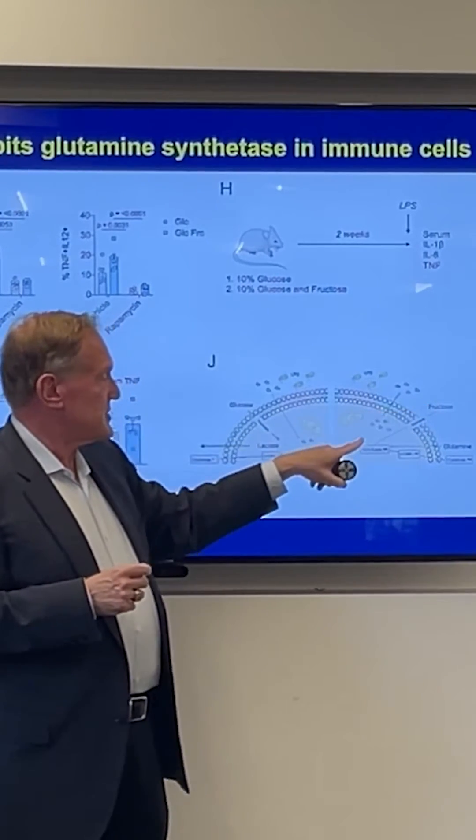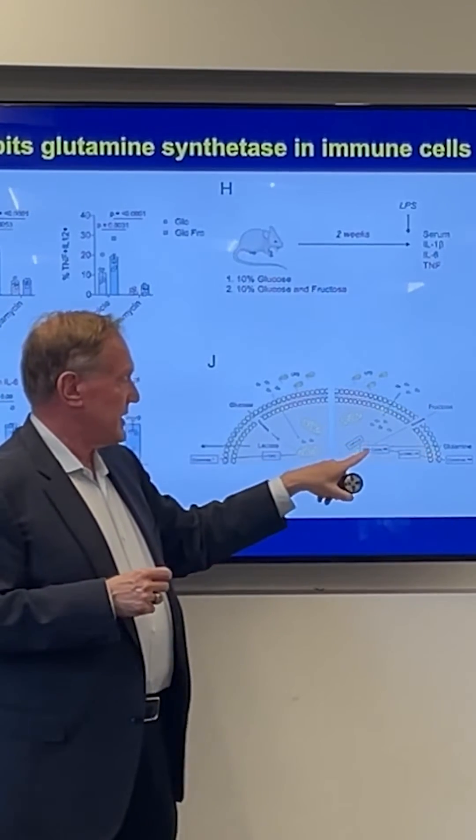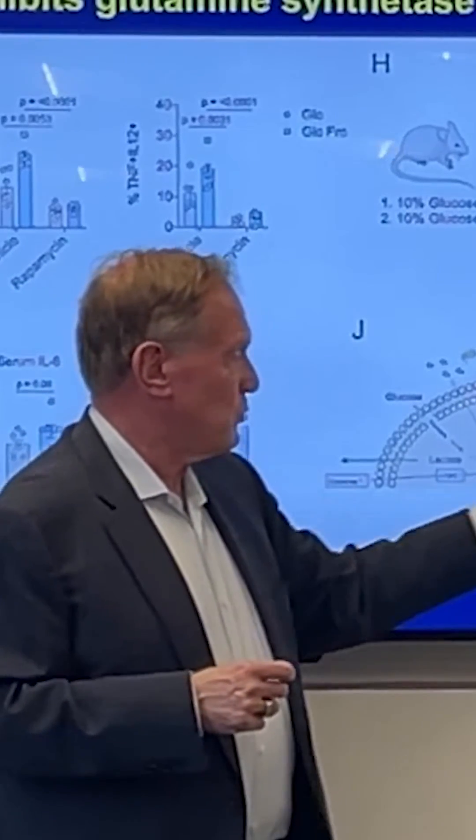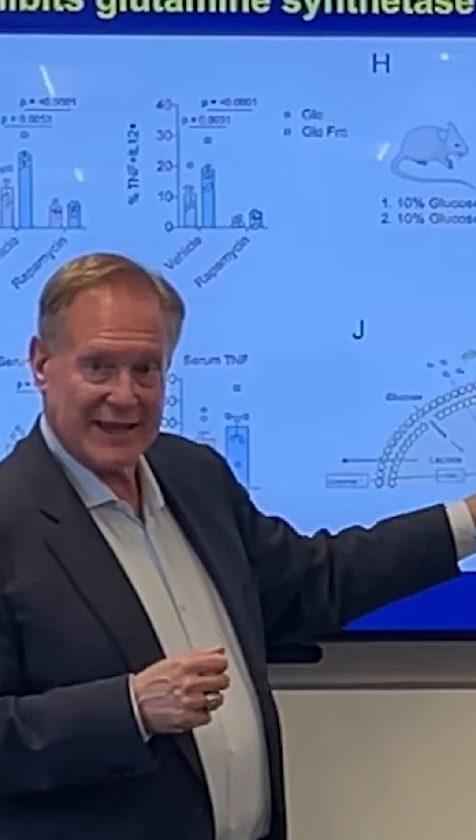When you put fructose in, it basically inhibits the ability to metabolize it because it won't let the glutamine get turned into GABA.